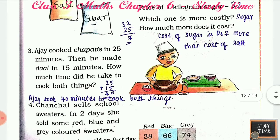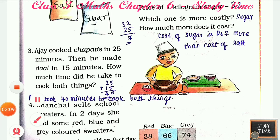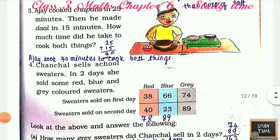Ajay cooked chapatis in 25 minutes, then he made dal in 15 minutes. How much time did he take to cook both things? You have to add: 25 plus 15 is 40. Ajay took 40 minutes to cook both things. Next, Chanchal sells school sweaters — in two days she sold some red, blue, and gray colored sweaters.